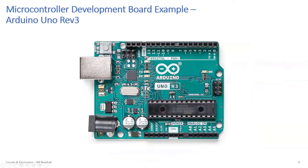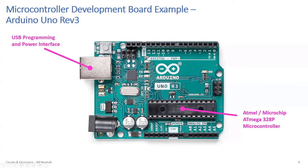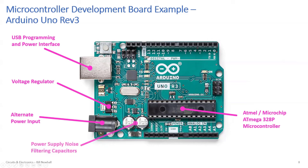Here is an example microcontroller development board — the Arduino Uno Rev3. Here's the microcontroller right here, and there's lots of other stuff on this board. This is the USB port for programming and power interface. There's a voltage regulator here. We have some capacitors to filter the power supply voltage — right at the power pins, just like putting capacitors at the power pins of an op amp, to filter noise out of the power supply lines.